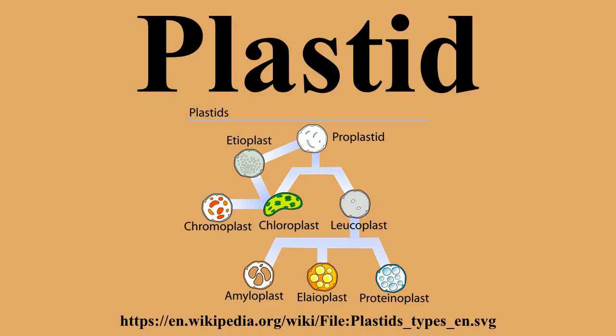All plastids are derived from proplastids, which are present in the meristematic regions of the plant. Proplastids and young chloroplasts commonly divide by binary fission, but more mature chloroplasts also have this capacity.